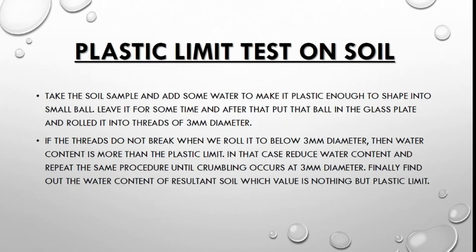Now moving toward the plastic limit test on soil. Take the soil sample and add some water to make it plastic enough to shape into a small ball. Leave it for some time, then put that ball on a glass plate and roll it into threads of 3 mm diameter. If the threads do not break when rolled below 3 mm diameter, then the water content is more than the plastic limit. In that case, reduce the water content and repeat the same procedure until crumbling occurs at 3 mm diameter. Finally, find out the water content of the resultant soil, which is the plastic limit.